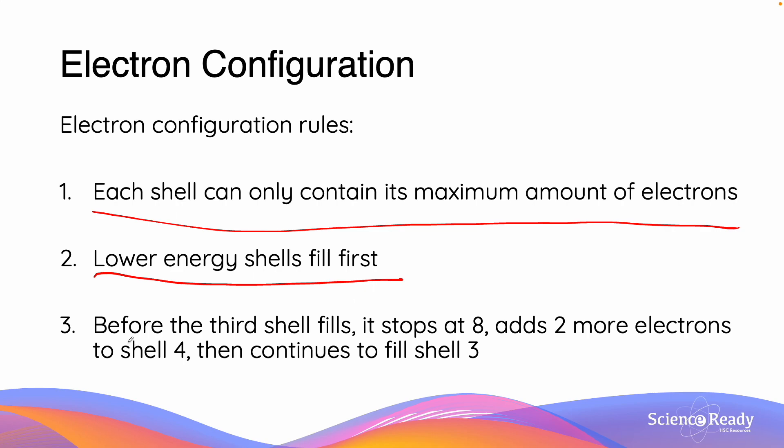Rule number 3 slightly breaks this. The last one is quite important because it somewhat is an exception to rule 2. It says that before the third shell fills up to 18, it will stop at 8, add 2 more electrons to shell 4, and then it will continue to fill up shell 3. And we'll look at some examples in the next slide talking about how this works.